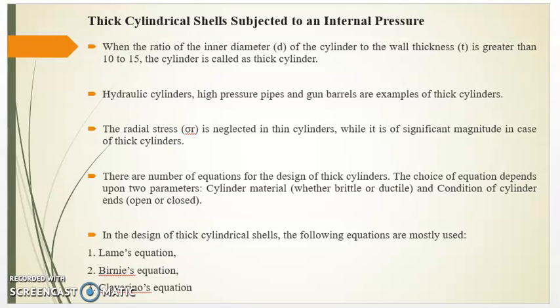Welcome. Today we will see thick cylindrical shells subjected to an internal pressure. When the ratio of the inner diameter of the cylinder to the wall thickness is greater than 10 to 15, the cylinder is called a thick cylinder. Hydraulic cylinders, higher pressure pipes, and gun barrels are examples of thick cylinders.